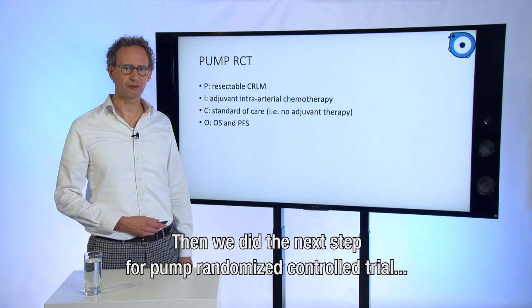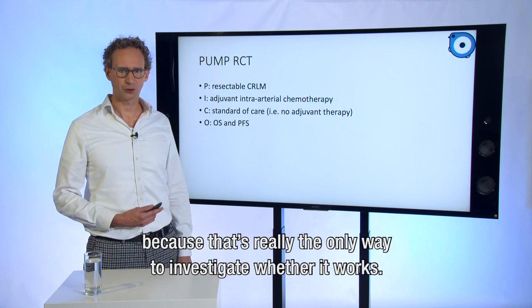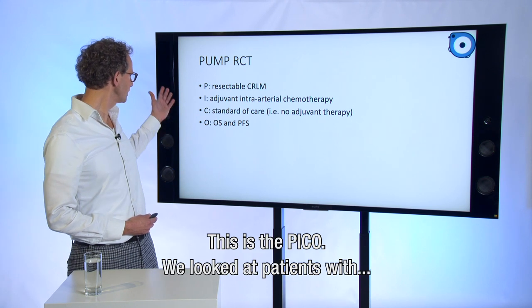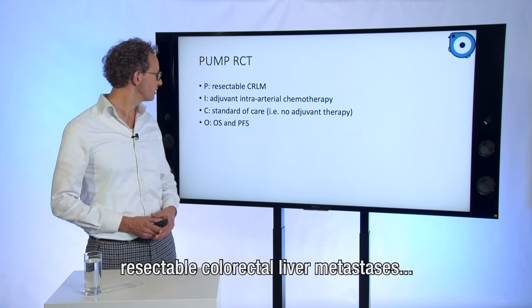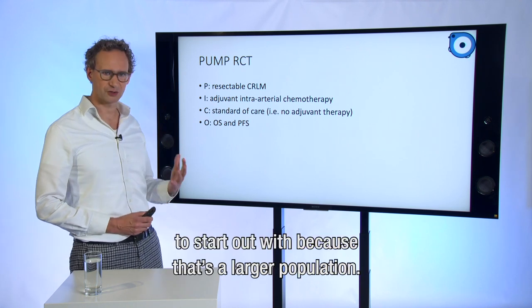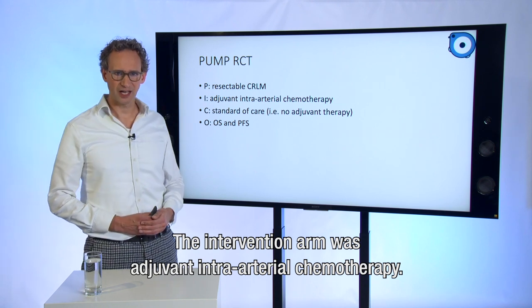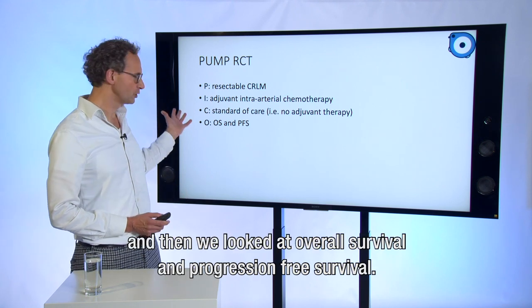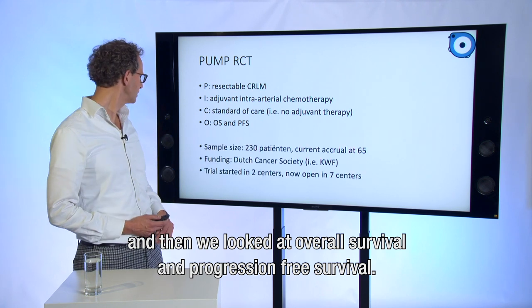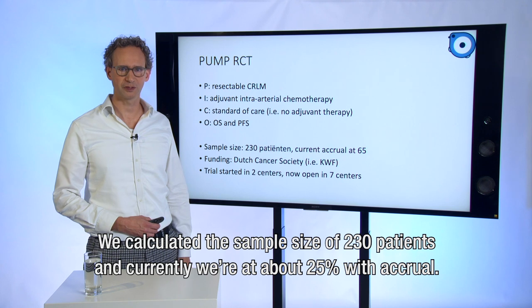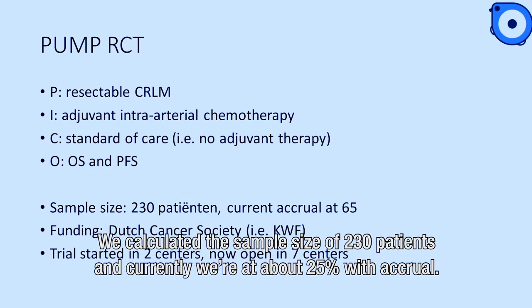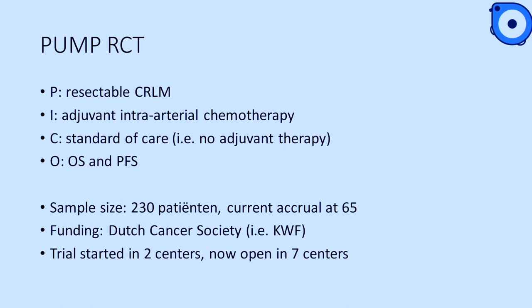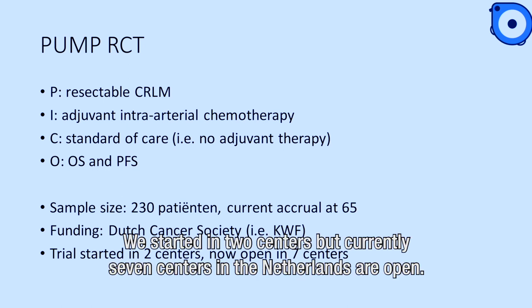Then we did the next step: a pump randomized controlled trial, because that's really the only way to show whether it works. This is the PICO: we looked at patients with resectable colorectal liver metastasis. The intervention arm was adjuvant intra-arterial chemotherapy; the comparator arm was standard of care, which is surgery alone. We looked at overall survival and progression-free survival. We calculated a sample size of 230 patients and currently we're at about 25% accrual. We're very fortunate that the Dutch Cancer Society — also known as KWF — is funding this trial, which started in two centers and currently has seven centers in the Netherlands open.